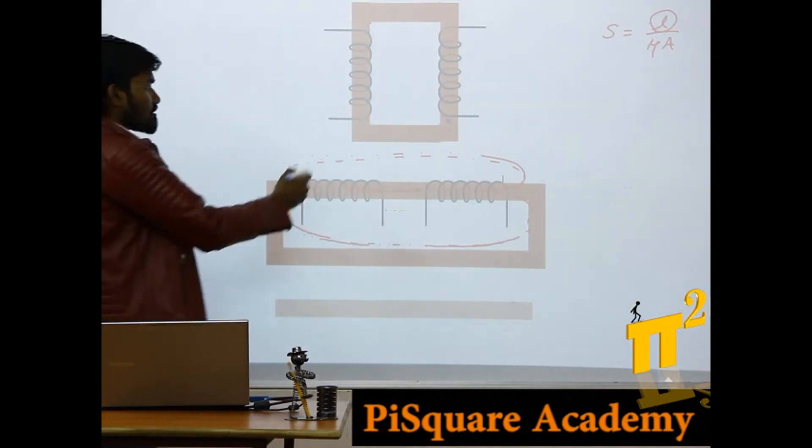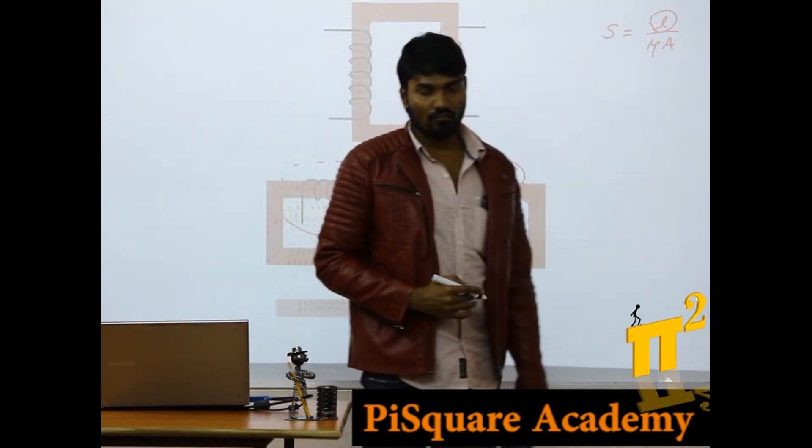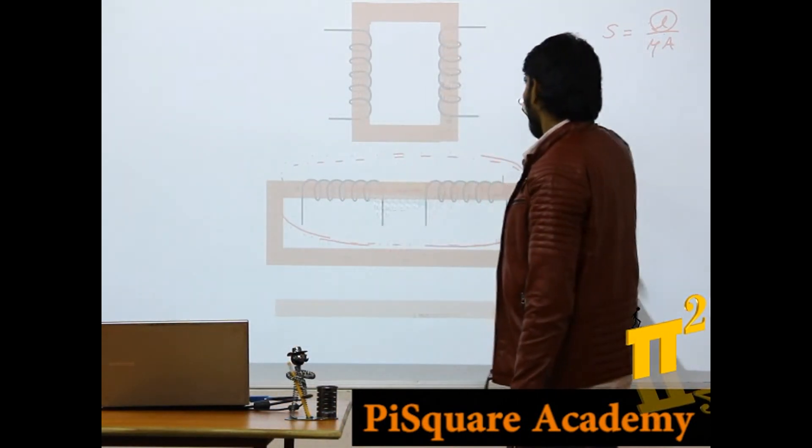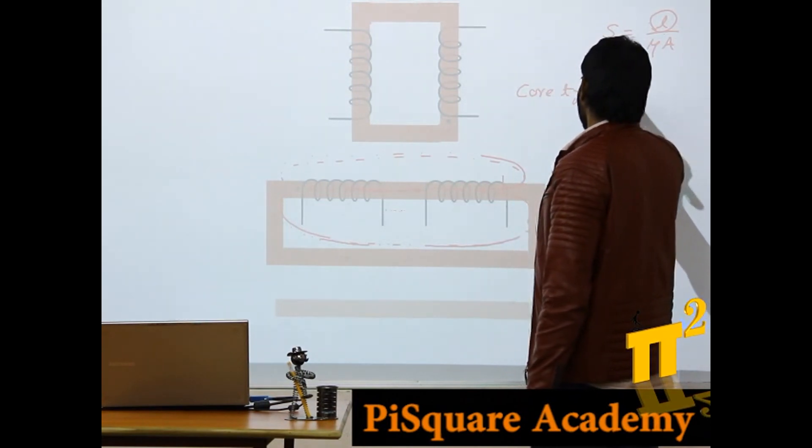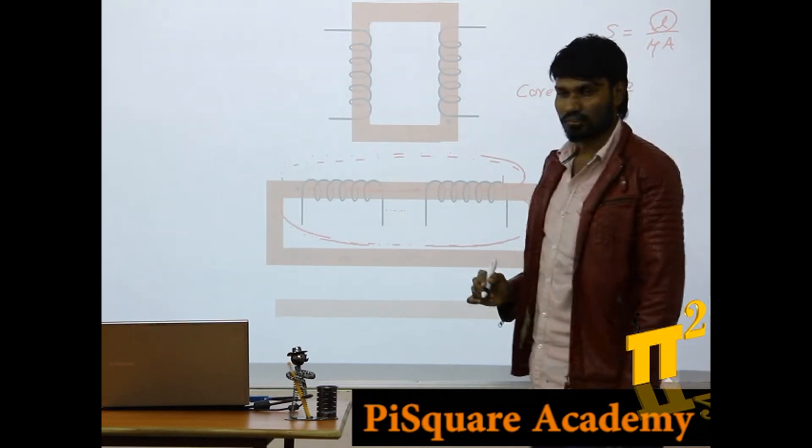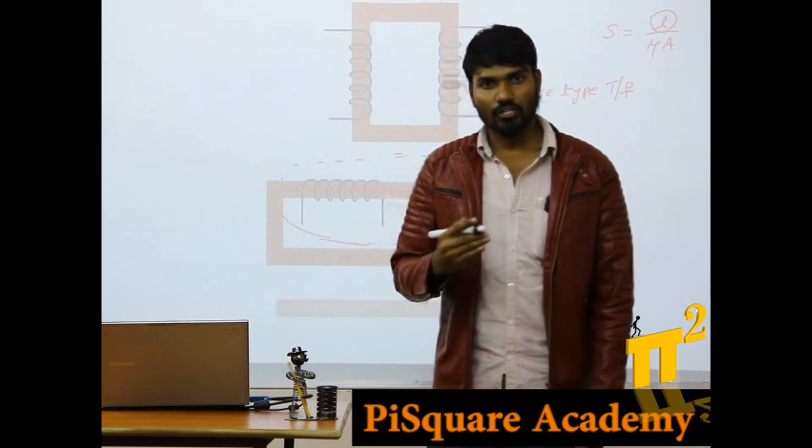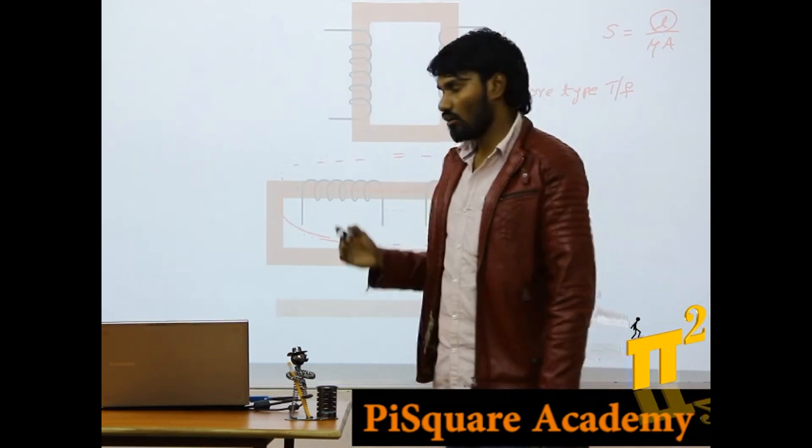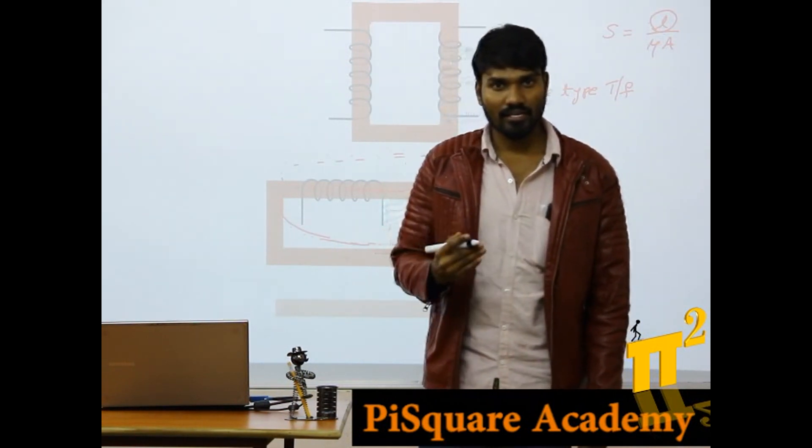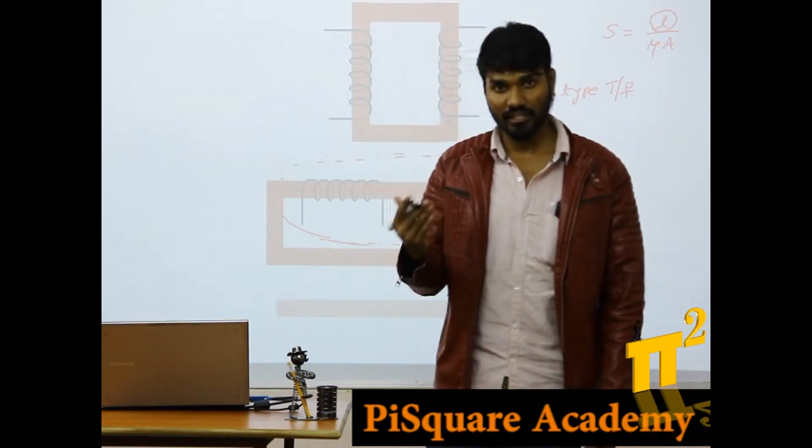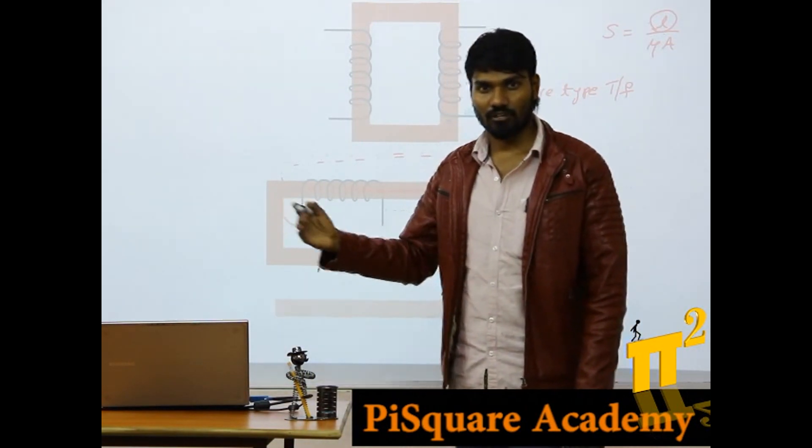So this is one form of transformer which is called as core type transformer. So these are basic construction of a transformer. Now we will do many modifications on this to increase the magnetic linkage even further, like shell type and different types of windings. It is all we will see in further classes.